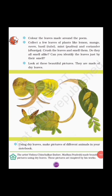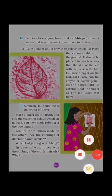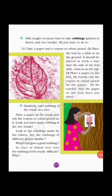Look at these beautiful pictures — they are made of dry leaves. Using dry leaves, make a picture of a different animal in your notebook. This is an activity you can do if leaves are available to you. Didi also taught everyone how to take rubbings — that is, prints of leaves and tree trunks. These are some steps written on how to take the prints of leaves and tree trunks. You can do this at home if possible, and read these steps by yourself.